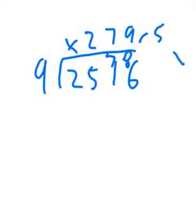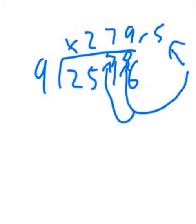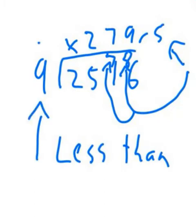Your remainder numbers, that one there, that one there, this one here, they always have to be less than the number that you're trying to divide by. If they're not, you've got a problem.